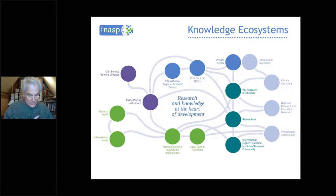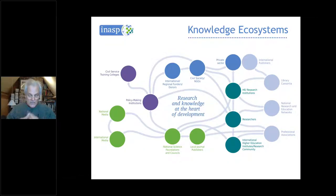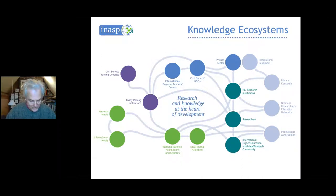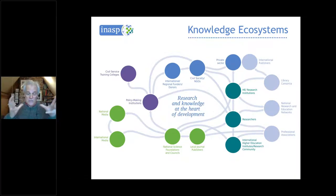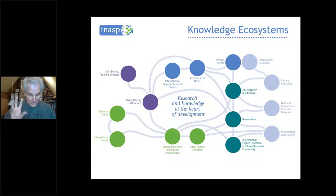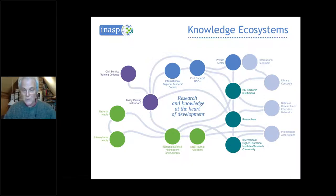Of course, researchers are just part of the system. What we talk about at INASP is the knowledge ecosystem — a whole lot of other stakeholders involved in the process of research communication and research uptake. Here's a representation from our 1996–2020 strategy, showing all the different organisations and individuals involved. At the middle is our vision statement: 'Research and knowledge at the heart of development.' We believe that sustainable knowledge ecosystems in the global south are essential for international development, and the recent COVID crisis has illustrated that it's vital to have these everywhere.